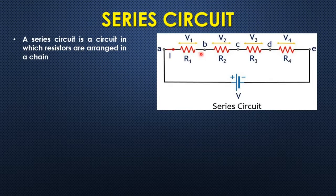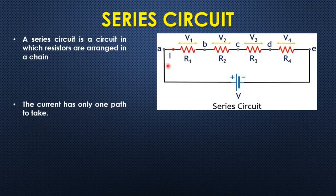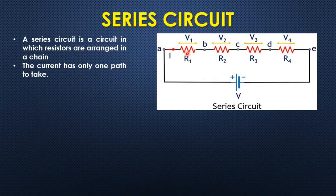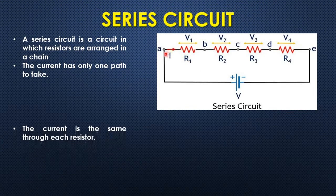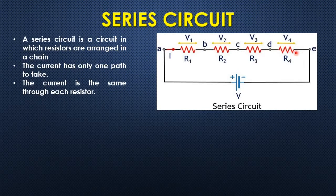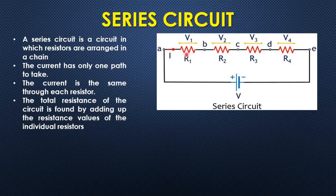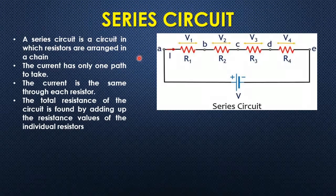All these resistors are connected in a chain manner so that the current flowing through this has only one path to take. The current which passes through R1 has to pass through R2 as it does not have any other path. Similarly, the current in all the resistors is the same across each resistor. If we find the equivalent resistance or the total resistance of the path, it is found by adding up the resistance values of the individual resistors.